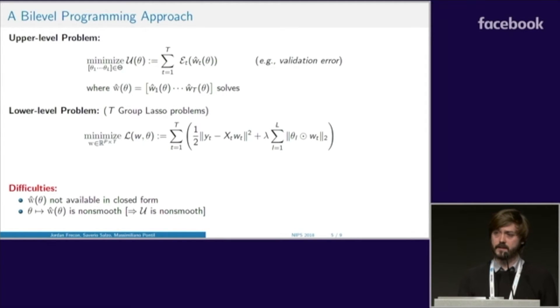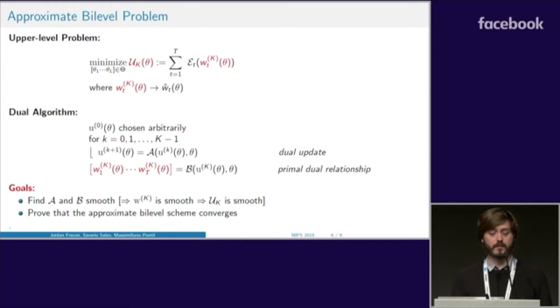First, W hat is not available in closed form, and it is not a smooth function of theta. To overcome these two issues, we propose an approximate bi-level problem.